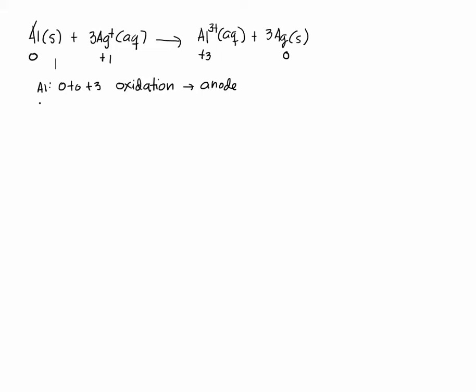And then silver goes from positive one to zero. How do you become less positive? By gaining electrons. So silver underwent reduction. That means that silver is our cathode.